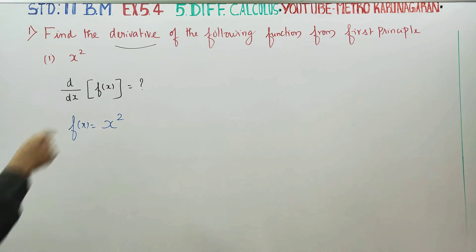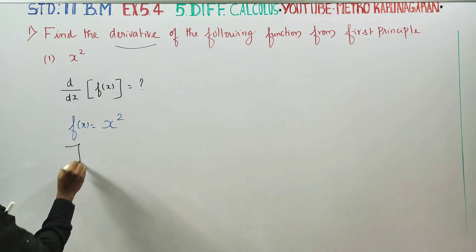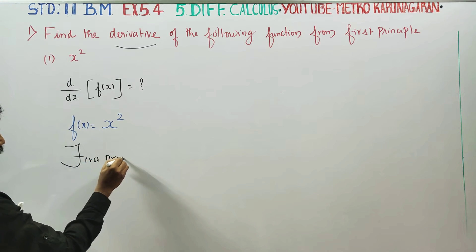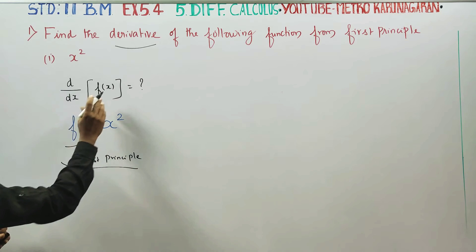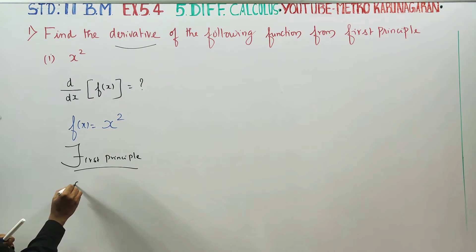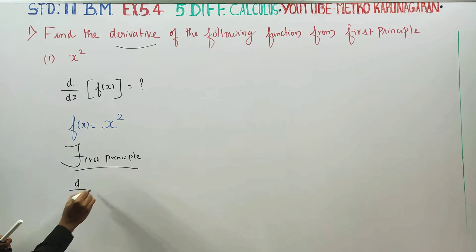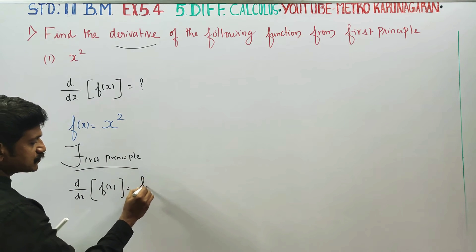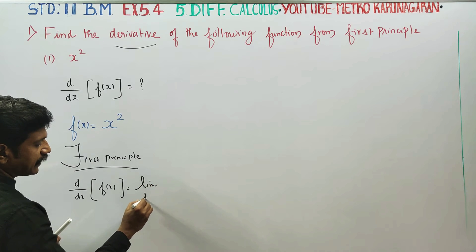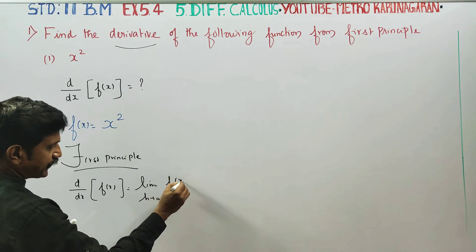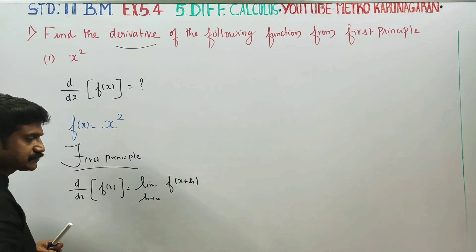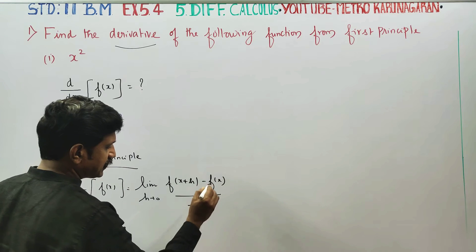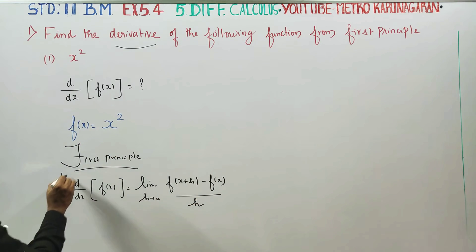The first principle concept gives us the derivative of the function. That is, d by dx of f of x equal to x squared is defined as: limit h tends to 0, f of x plus h minus f of x, all divided by h. This formula is the first principle.